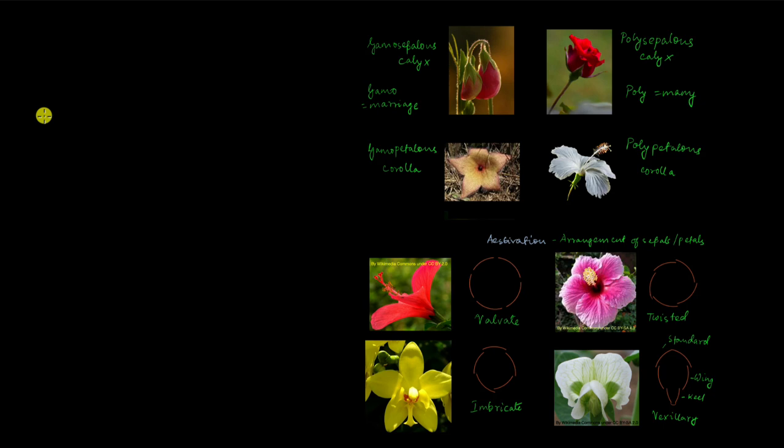So we have looked at how sepals and petals can be attached or free — called gamosepalous, gamopetalous, polysepalous, or polypetalous — and what aestivation is, along with the different types: valvate, twisted, imbricate, and vexillary.